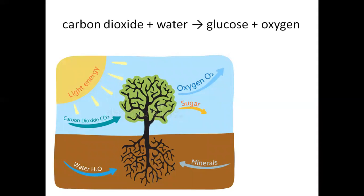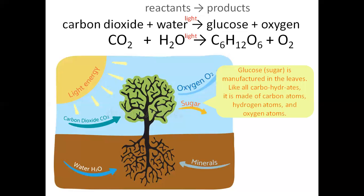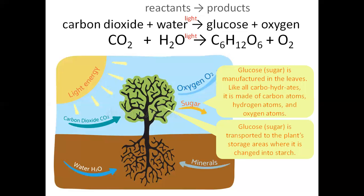A word equation: carbon dioxide and water, with light energy, allow plants to produce glucose and oxygen. The substances on the left of the arrow are called reactants — the reactants are carbon dioxide and water. The substances on the right of the arrow are called products — the products are glucose and oxygen. We can write this equation in symbols. Glucose sugar is manufactured in the leaves; like all carbohydrates, it is made of carbon, hydrogen, and oxygen atoms. Glucose sugar is transported to the plant's storage area where it is changed into starch.